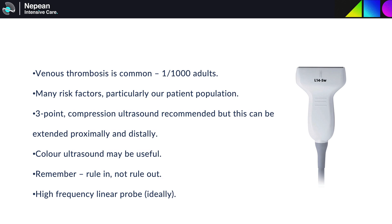DVTs are common, particularly in our patient population. In focused scanning, we can use a quick three-point compression scan, but this can be extended proximally or distally if needed. Colour ultrasound is useful, particularly as very acute thrombus is extremely hypoechoic and may not be easily visible. Scans we perform are going to be rule-in rather than rule-out, and for the most part we'll be using the high-frequency linear probe. In some patients, you may need to use a virtual convex mode to gain a little bit more depth, or switch to the curvilinear probe.